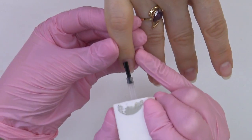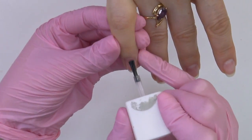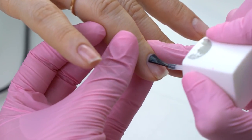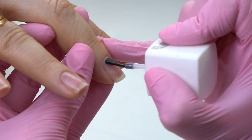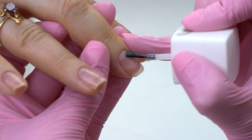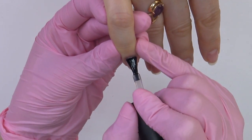Degrease and apply some acid free primer. Since my model's nails are thin, and there is no need for extra acidity. The base coat I'm using is also acid free.